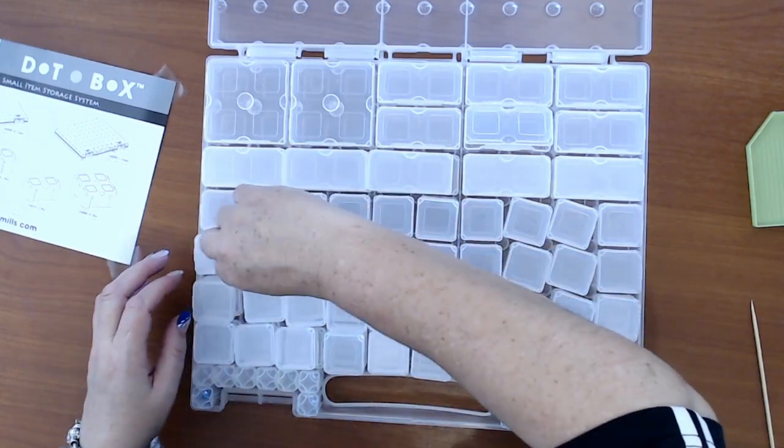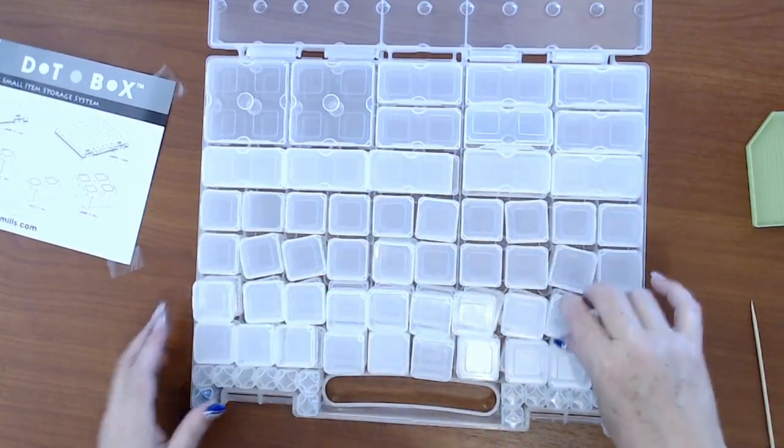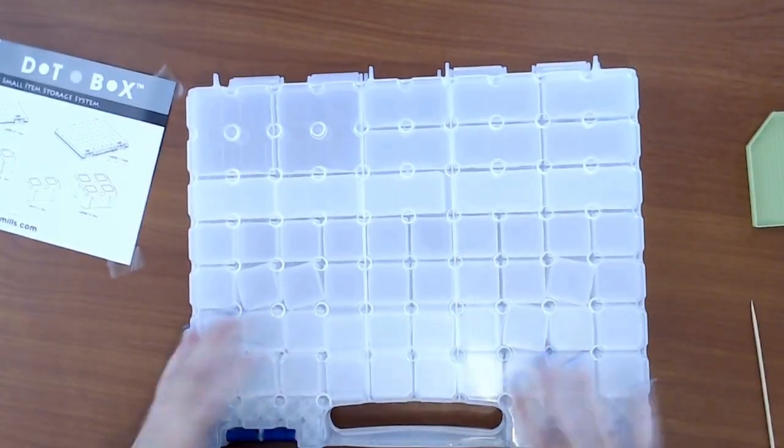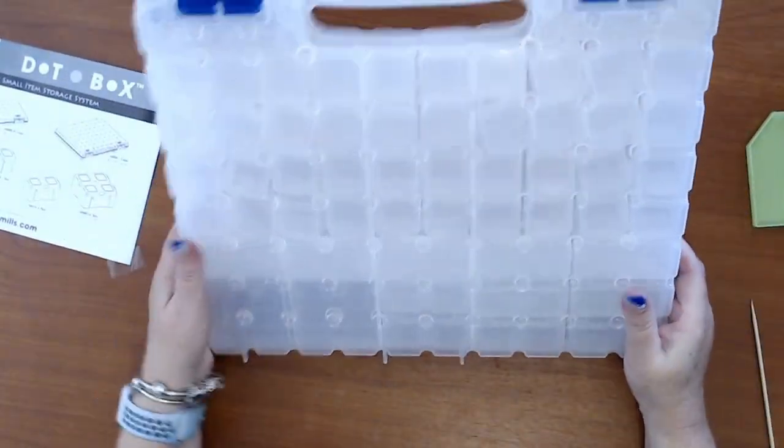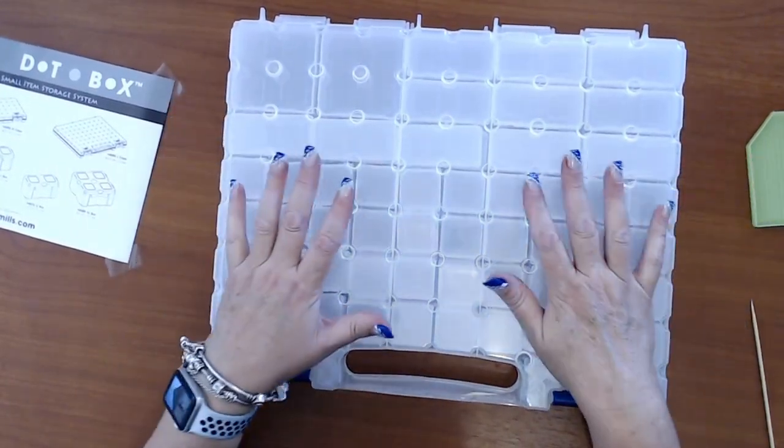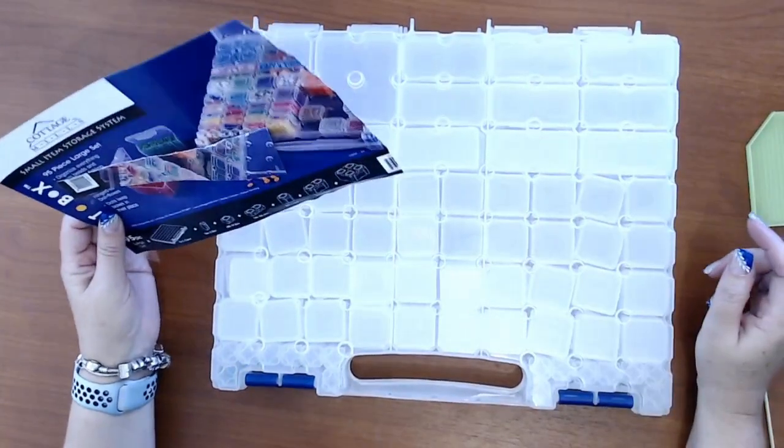Oh that would frustrate, that's going to frustrate me if they're not straight. Okay guys, so thank you for tuning in and checking this out. That's the dot box, cottage mill's dot box with one faulty container at this stage which I will let them know about.